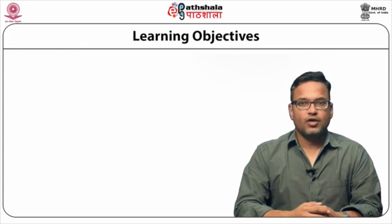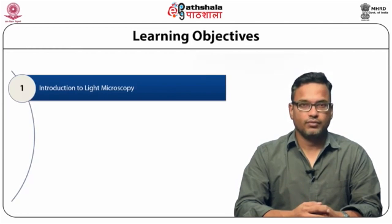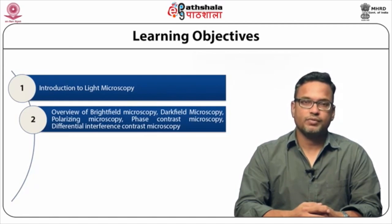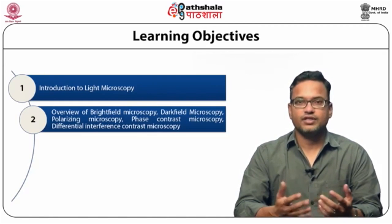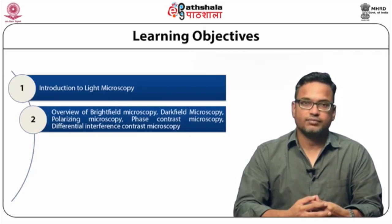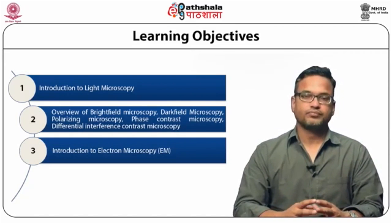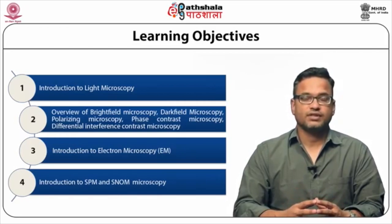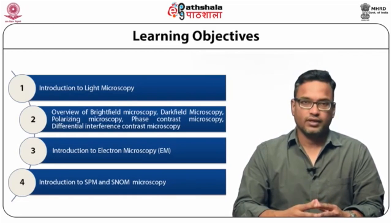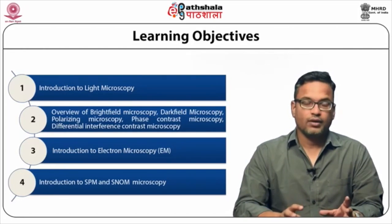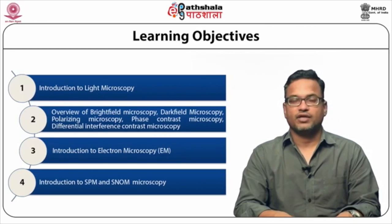The learning objective for this module is that by the end of this module, students will understand what is light microscopy or optical microscopy. We will get a brief overview about different kinds of light microscopy such as bright field, dark field, polarizing microscopy, phase contrast microscopy, and differential interference contrast microscopy. We will also get a brief introduction about how electron microscopy works, as well as about two more techniques which are SPM and SNOM microscopy. In the end, we will summarize all these light microscopy as well as electron microscopy to explain what are the usages of these microscopy.